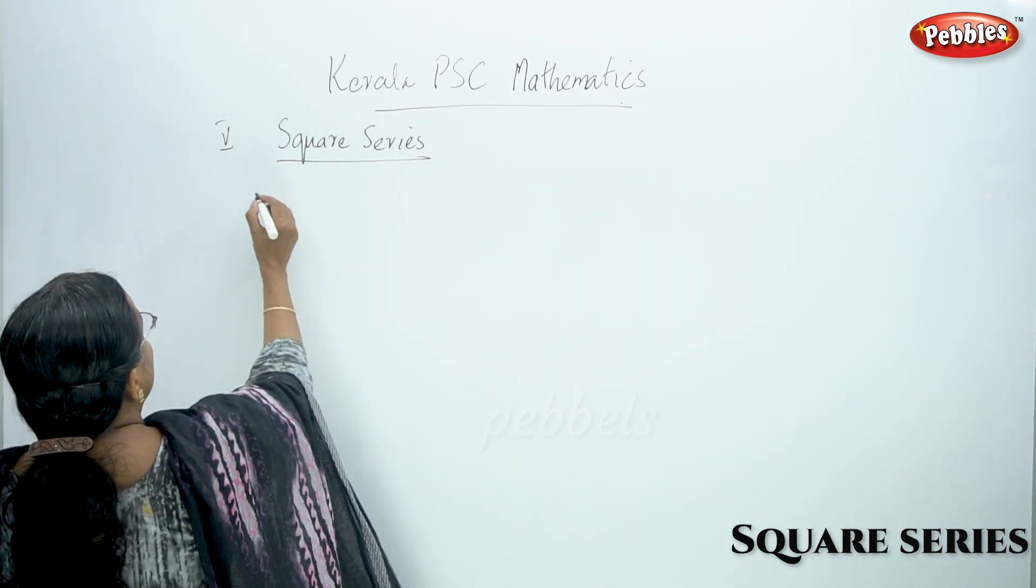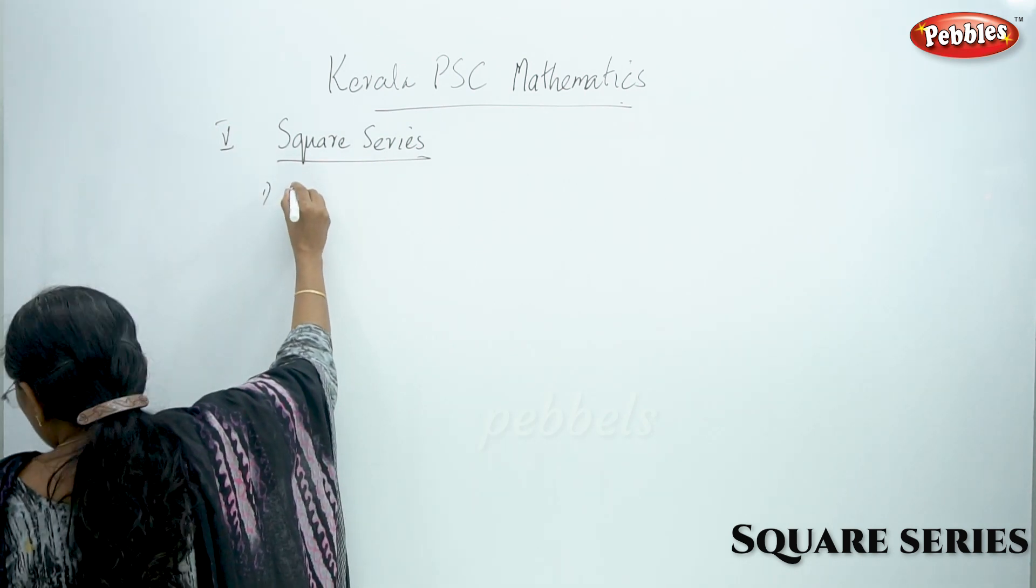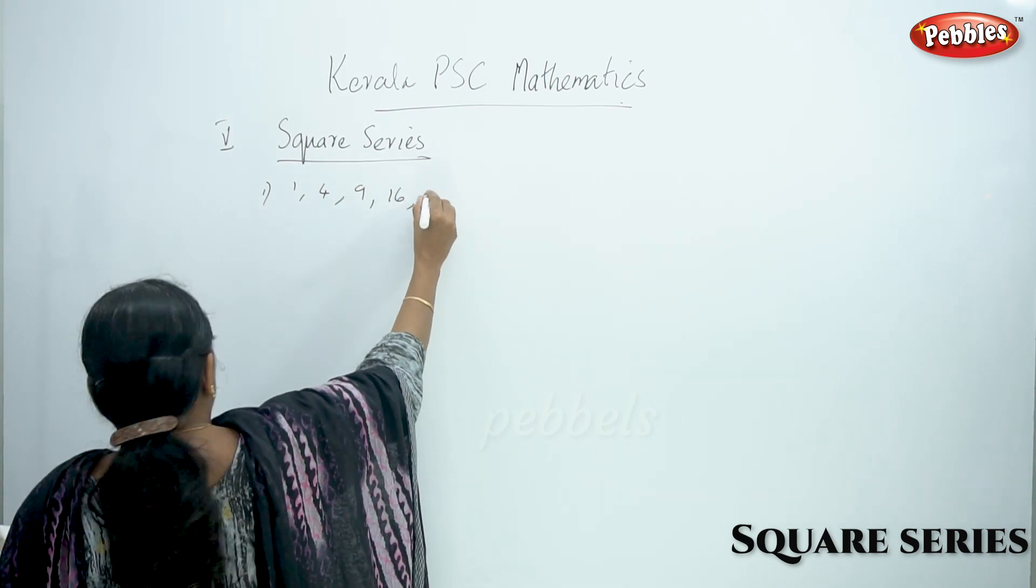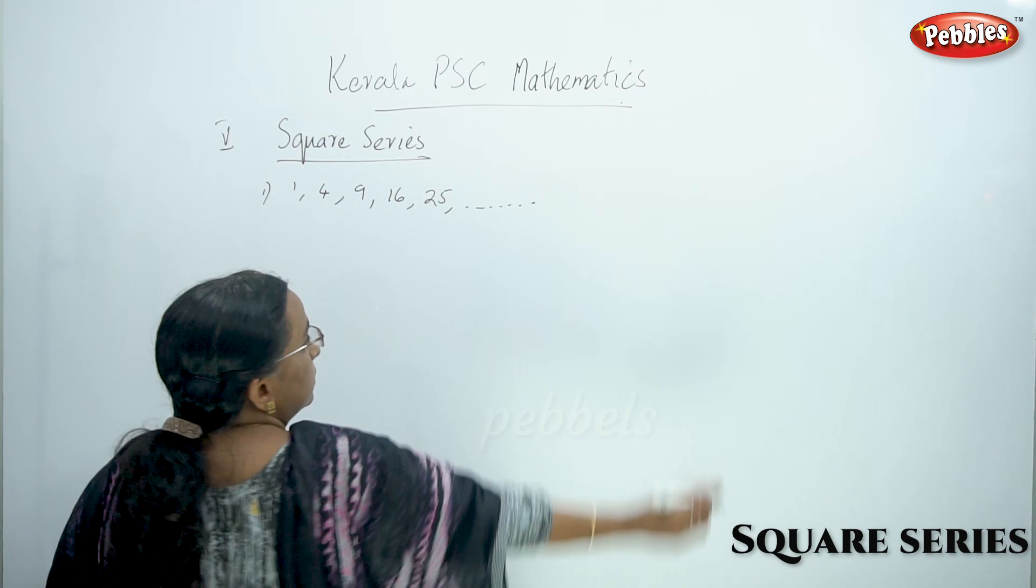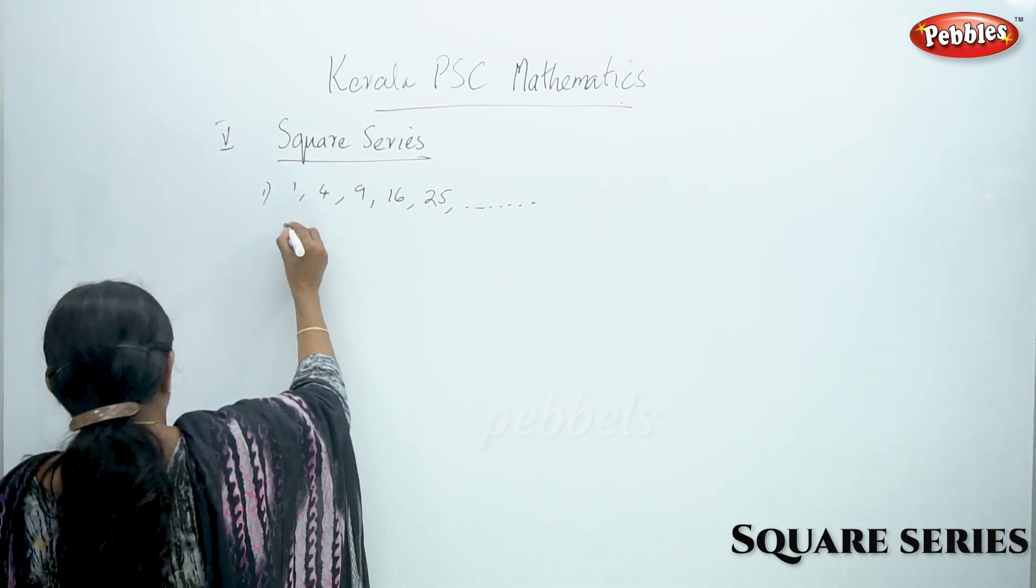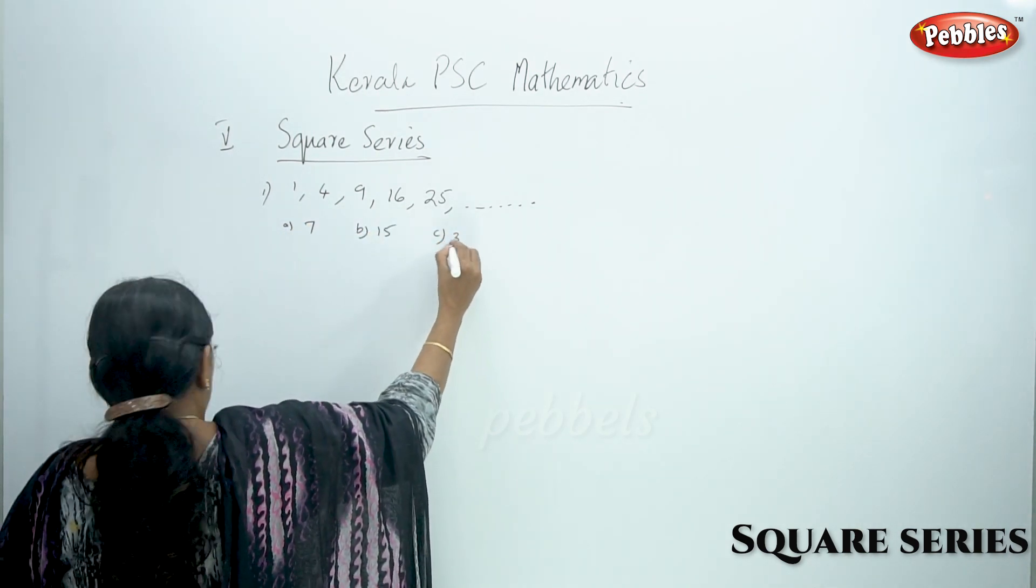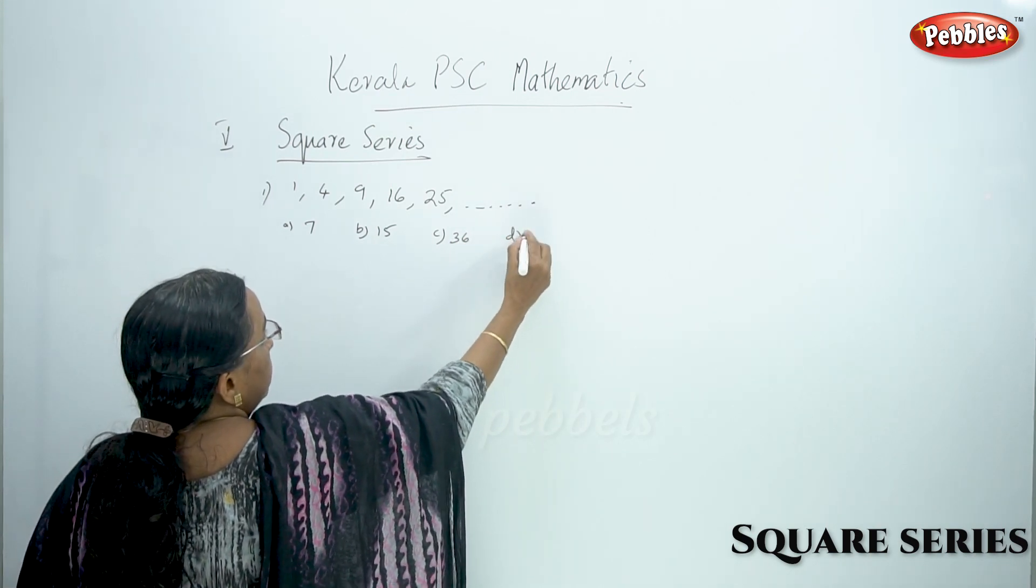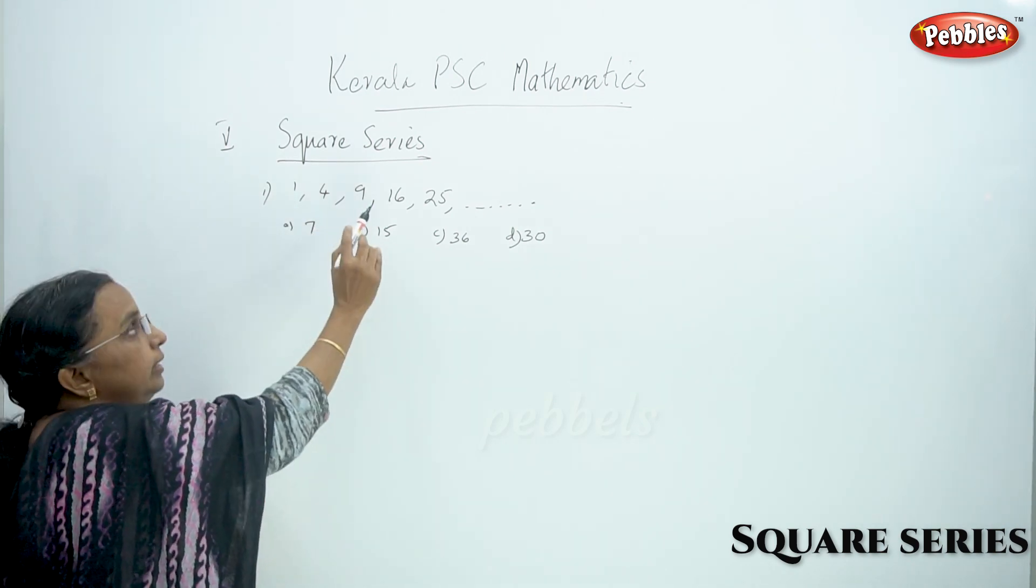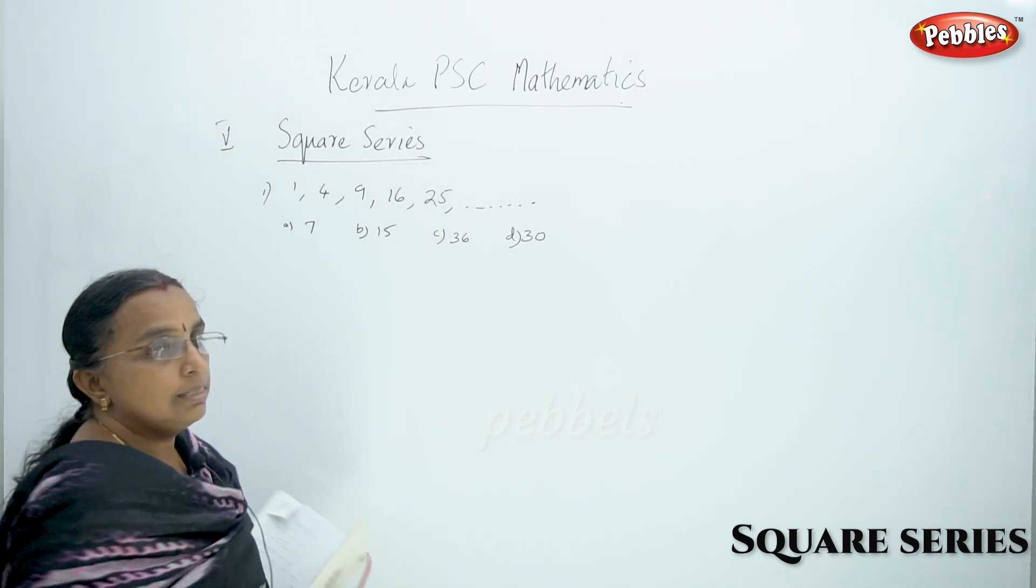This is square series. We have questions: 1, 4, 9, 10, 12, 20. We have a number. We have answers: 7, 10, 15, 10. This is square - 4 is 2, 9 is 3, 10 is 4, 25 is 5.